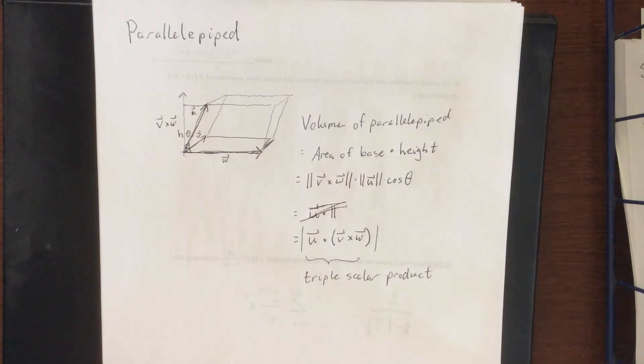We call it triple because there are three vectors involved. We call it scalar because the final result is going to be a scalar, and we call it a product because it involves both a cross product as well as a dot product. So pretty straightforward in terms of the name of this thing.